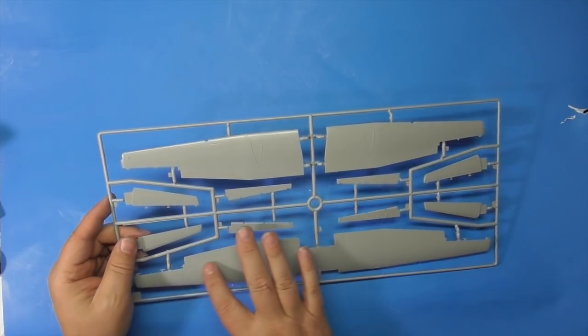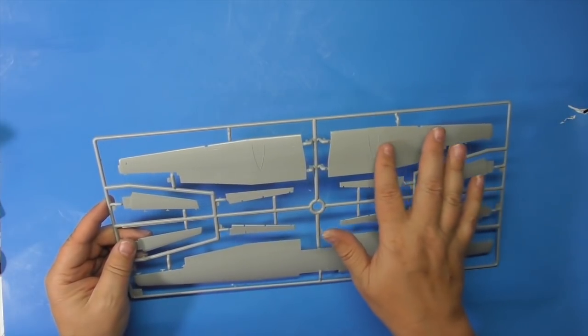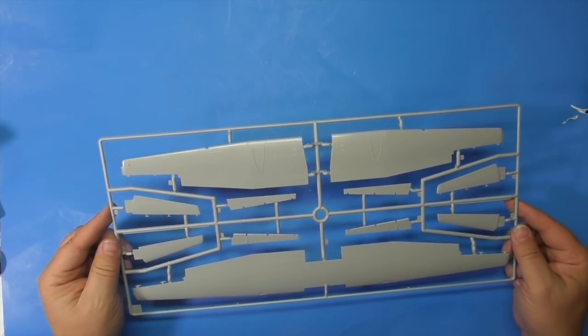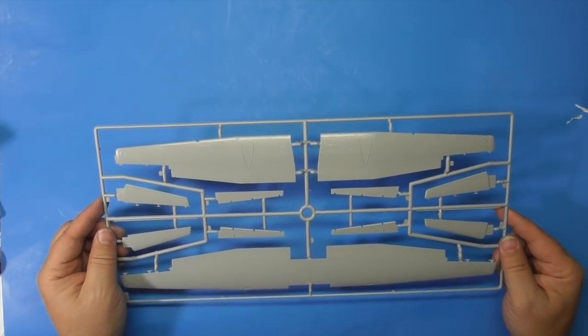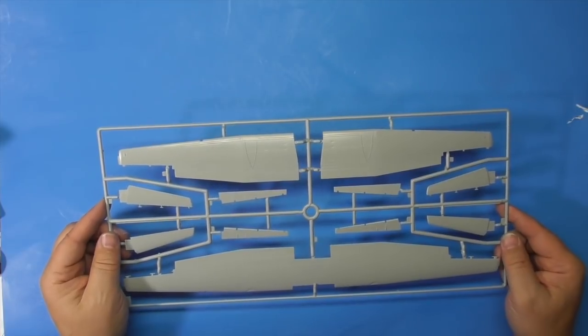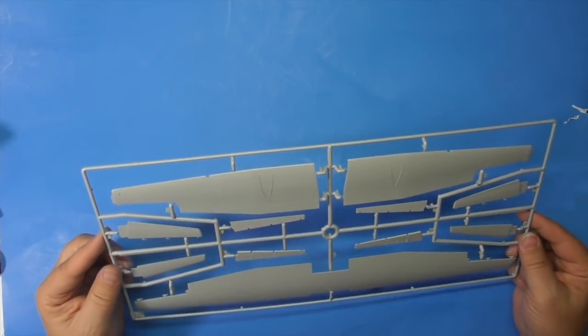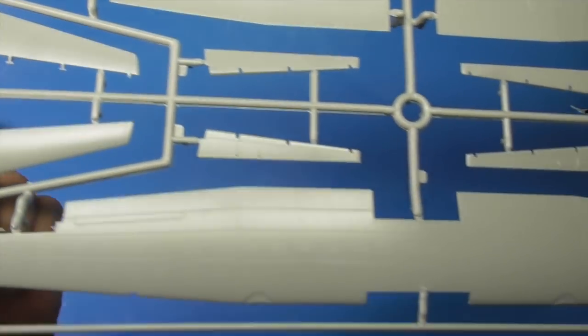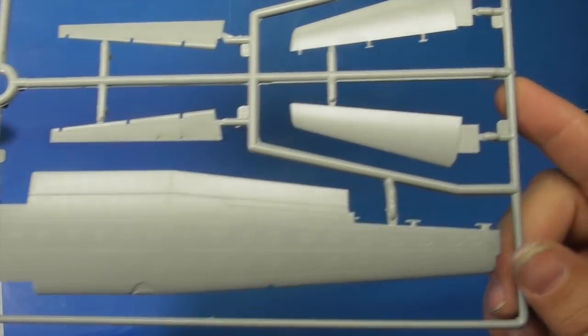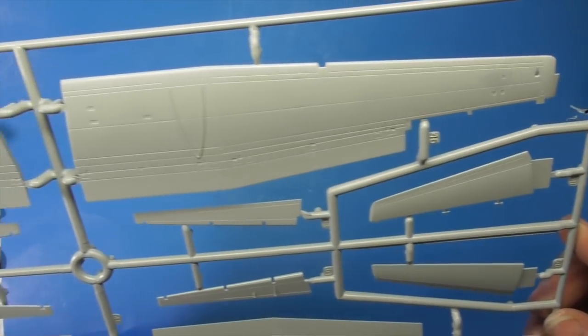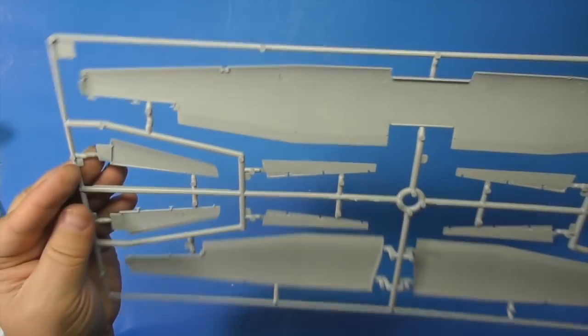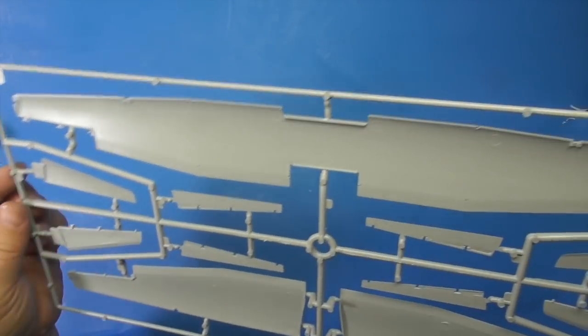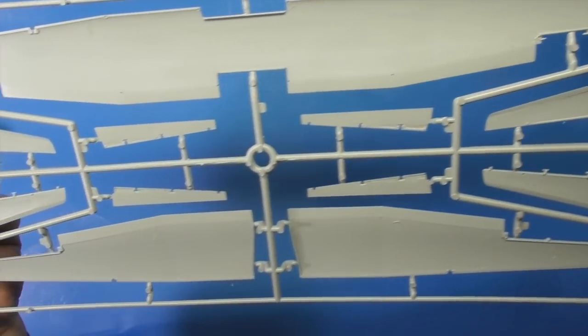I haven't seen the props yet so I'm hoping they're in there. No sink marks that I can see, no flash. It's good that you've got posable surfaces. You know, you don't want to clean these up before you mate the wings, but that's typical of aircraft builds.